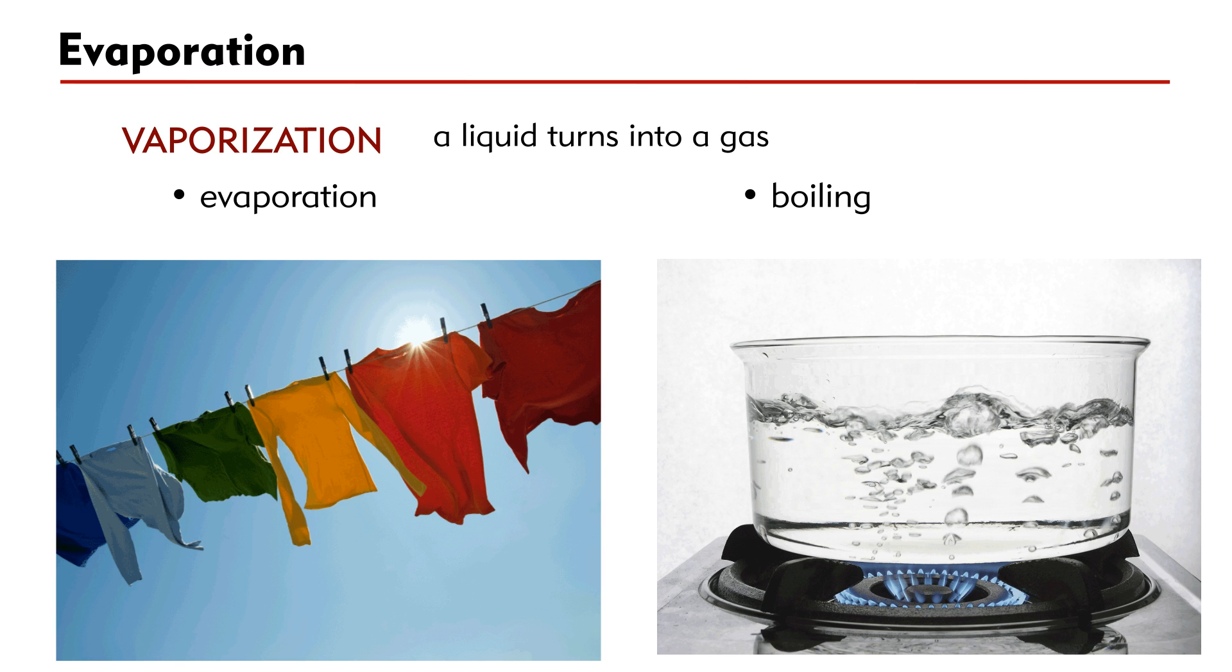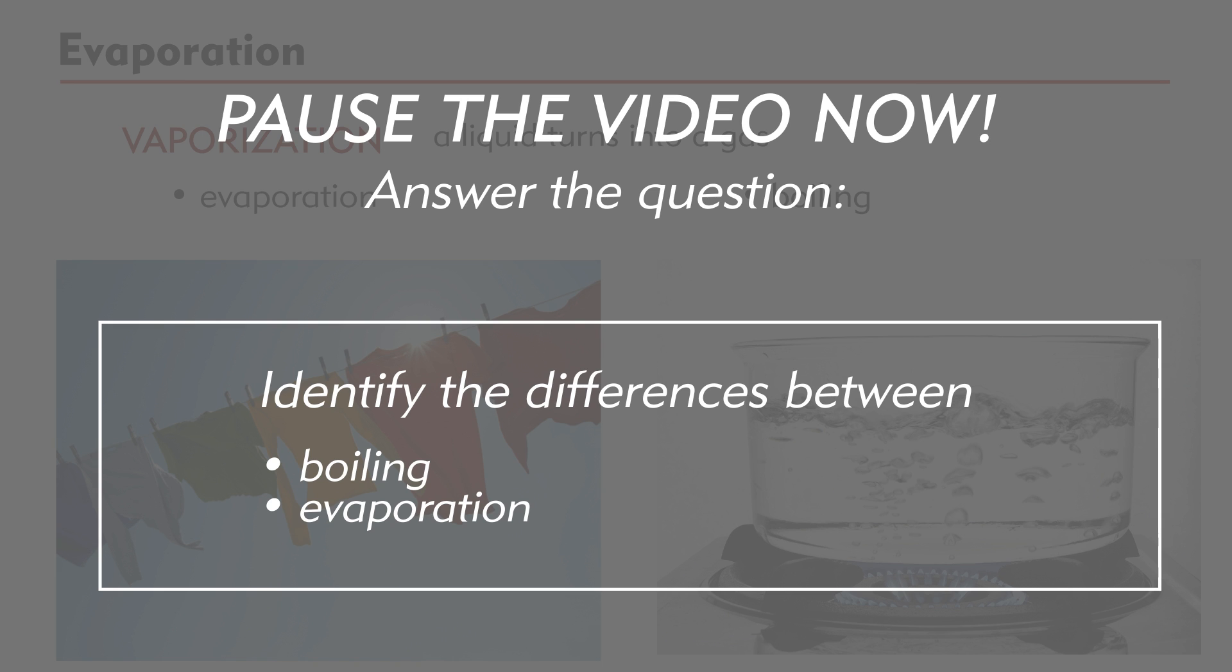Look at the two photos: drying cloth and boiling water. Both involve vaporization of water, that is, a change from liquid water into water vapor. However, there are subtle differences between the two vaporization processes. Can you identify their differences?